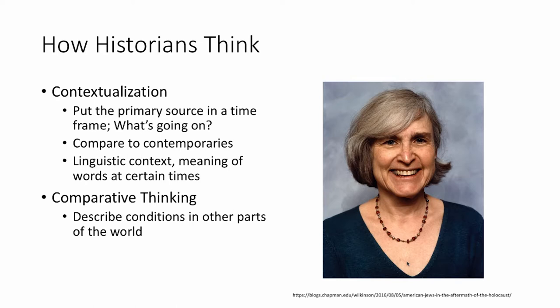Also make sure that students, when they're thinking historically, remember the linguistic context. The meaning of words in certain times in our history are different than what they currently are. For example, the word 'compromise' was considered the art of statesmanship prior to the Civil War. But if you call a politician today compromising, they're a flip-flopper — it's not a good connotation. Similarly, the word 'gay' meant happy historically, but now means a sexual orientation. Have kids beware of linguistic context.